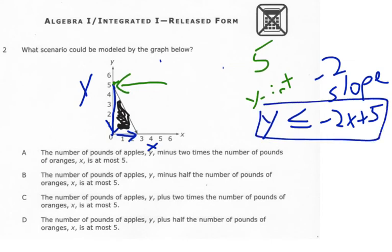But if you look at the answer choices, they're not written in y equals form. So for instance, in A, it says y minus 2 times the number of pounds of oranges x. So y minus 2x is at most, that means less than or equal to 5. So that one's not solved for y. So if I want to solve it for y, I have to add 2x to both sides.